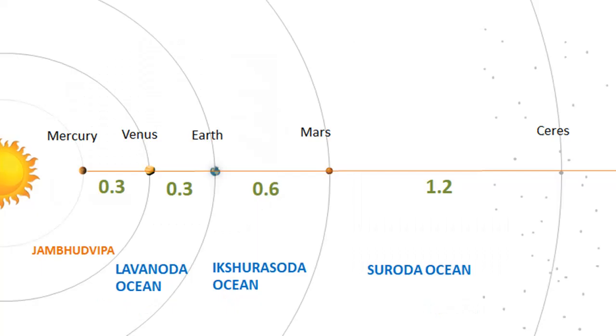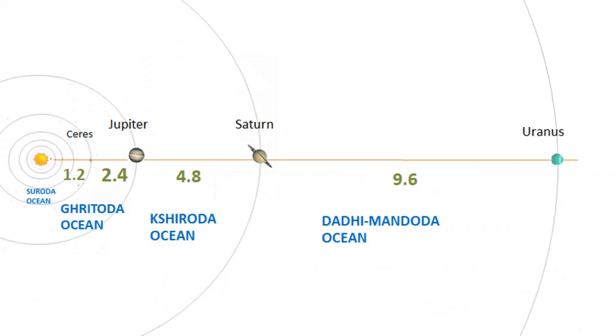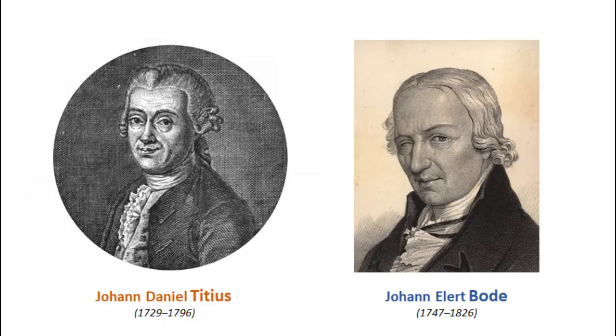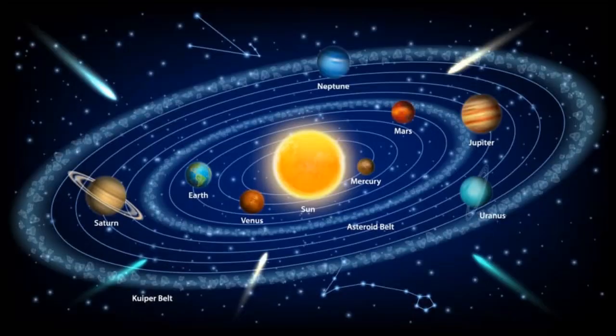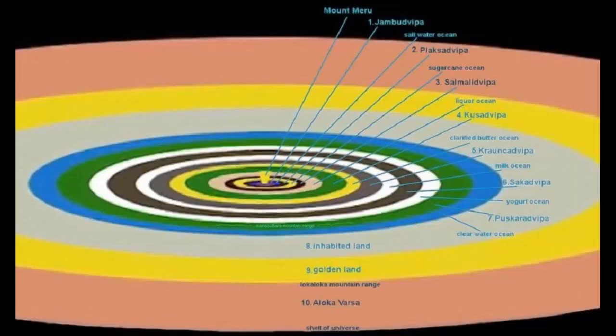This relationship between Bhumandala and the solar system is further supported by the fact that the various exotic oceans match the orbits of the planets, according to relative distances described in the Titius-Bode law. But that version is based on a sun-centred solar system, so both earth-centred and sun-centred views appear to be incorporated simultaneously.